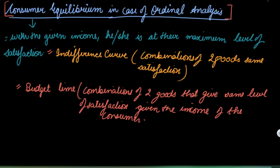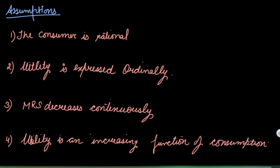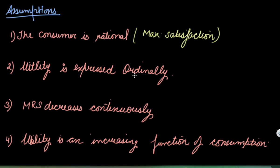These are the assumptions to find out the consumer equilibrium. Assumption one: the consumer is rational, which implies that the consumer aims at maximizing their satisfaction. Assumption two: utility is expressed ordinally, meaning in ranks — first, second, third, fourth.